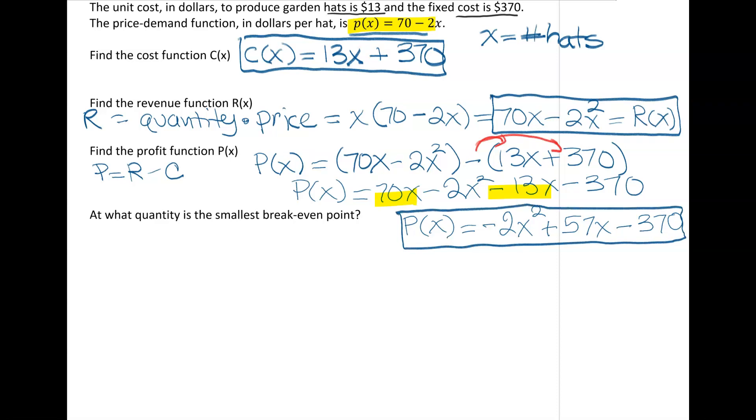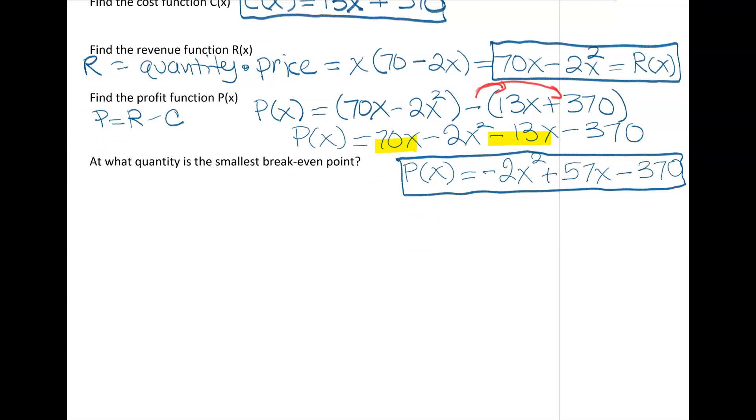The last thing: at what quantity is the smallest break-even point? Breaking even can be found two ways: when your revenue equals your cost, or when you take your profit function and figure out when that equals zero. I think for us we have our profit function here already, so I'm going to go with the profit function and set that equal to zero. So I have -2x² + 57x - 370 = 0.